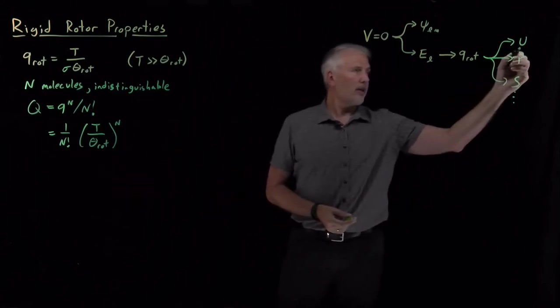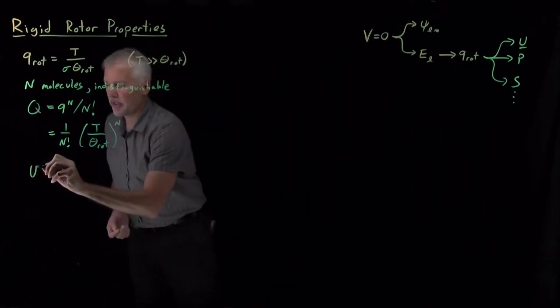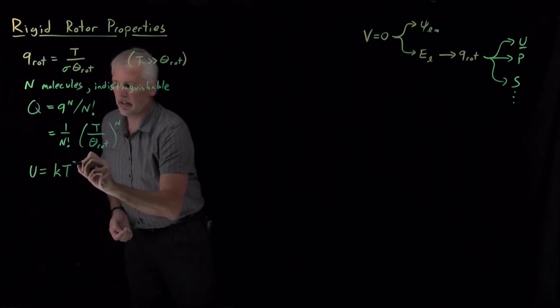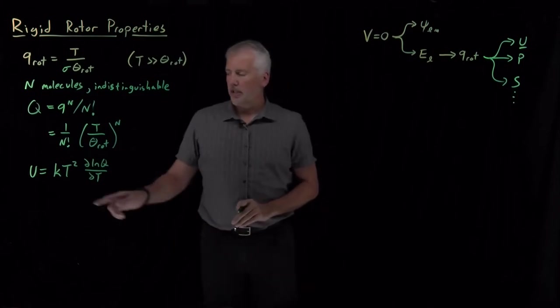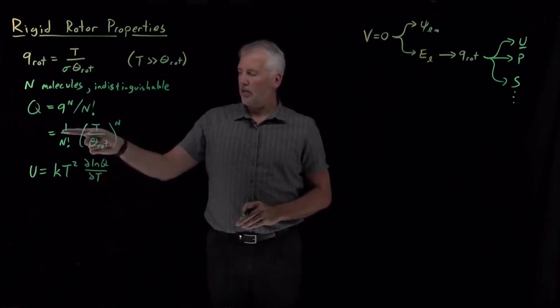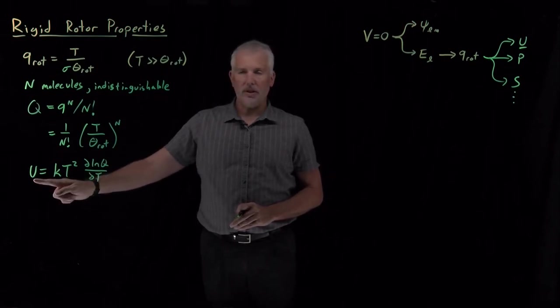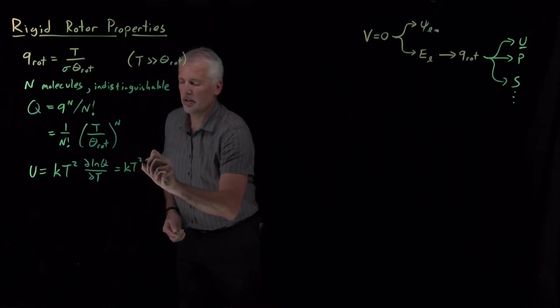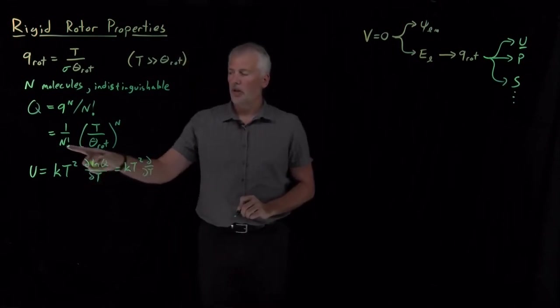If we want to know a property like the internal energy, then we need to remember what the thermodynamic connection formula is that connects the partition function to the energy. And that connection formula tells us just take d log q dT multiplied by kT squared. That will give us the internal energy. So, I want to know what is the temperature derivative, d/dT, of log q.